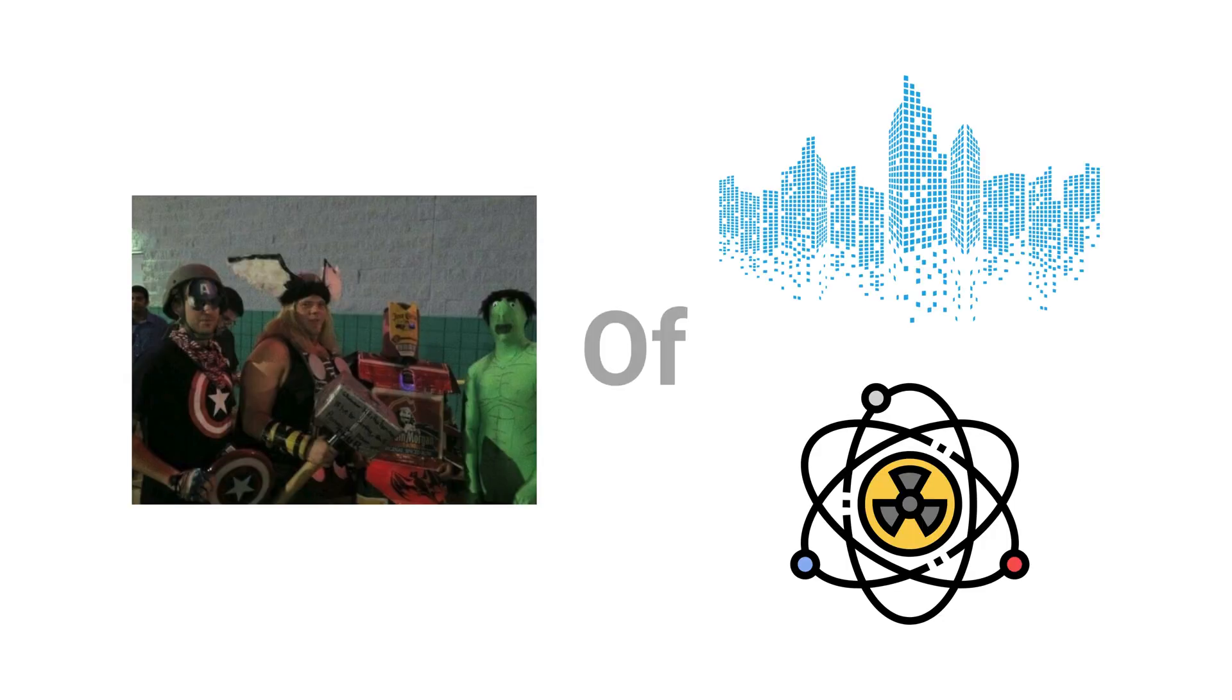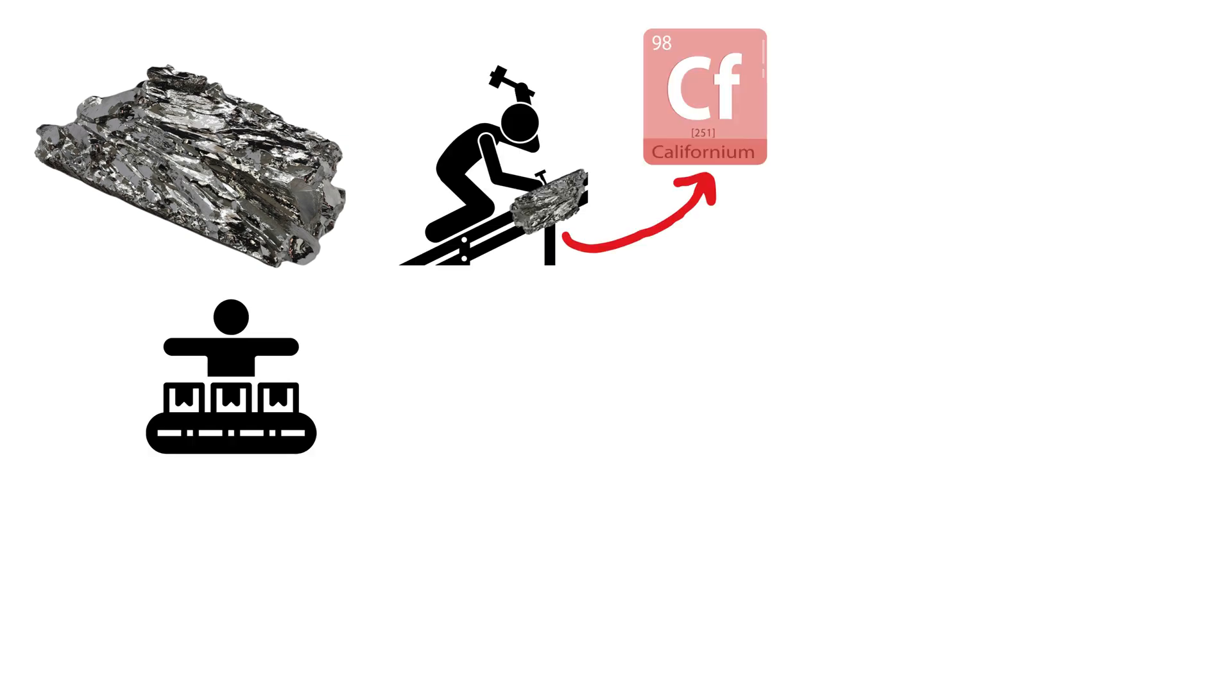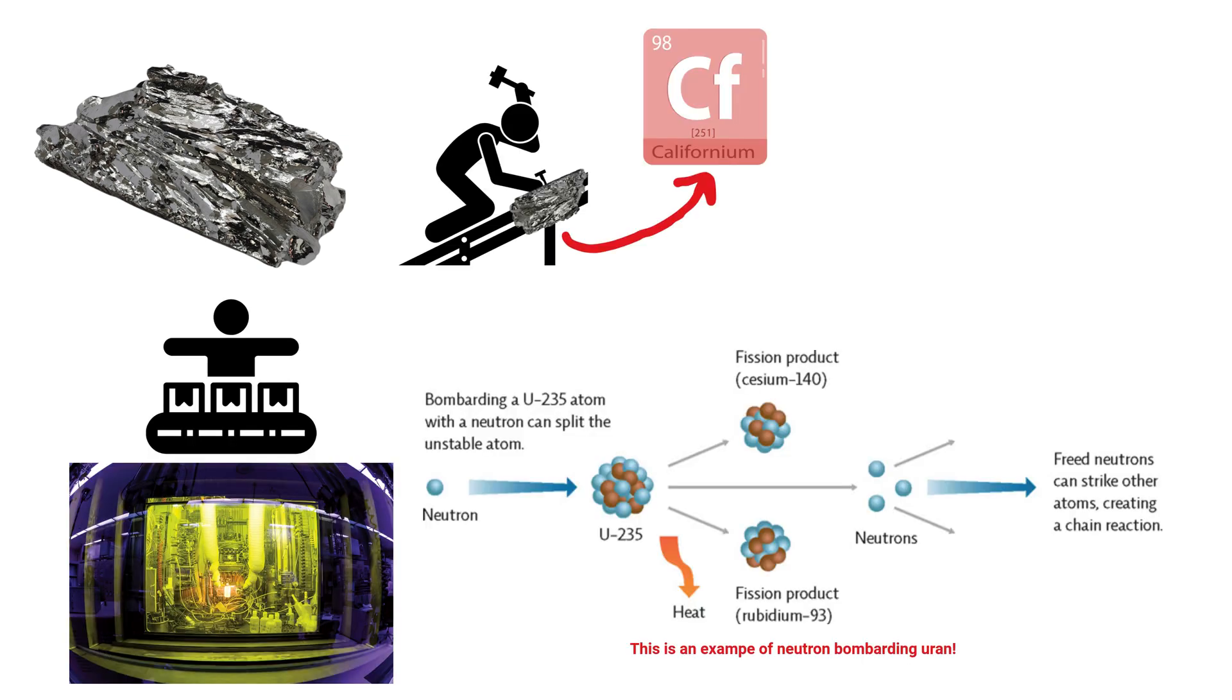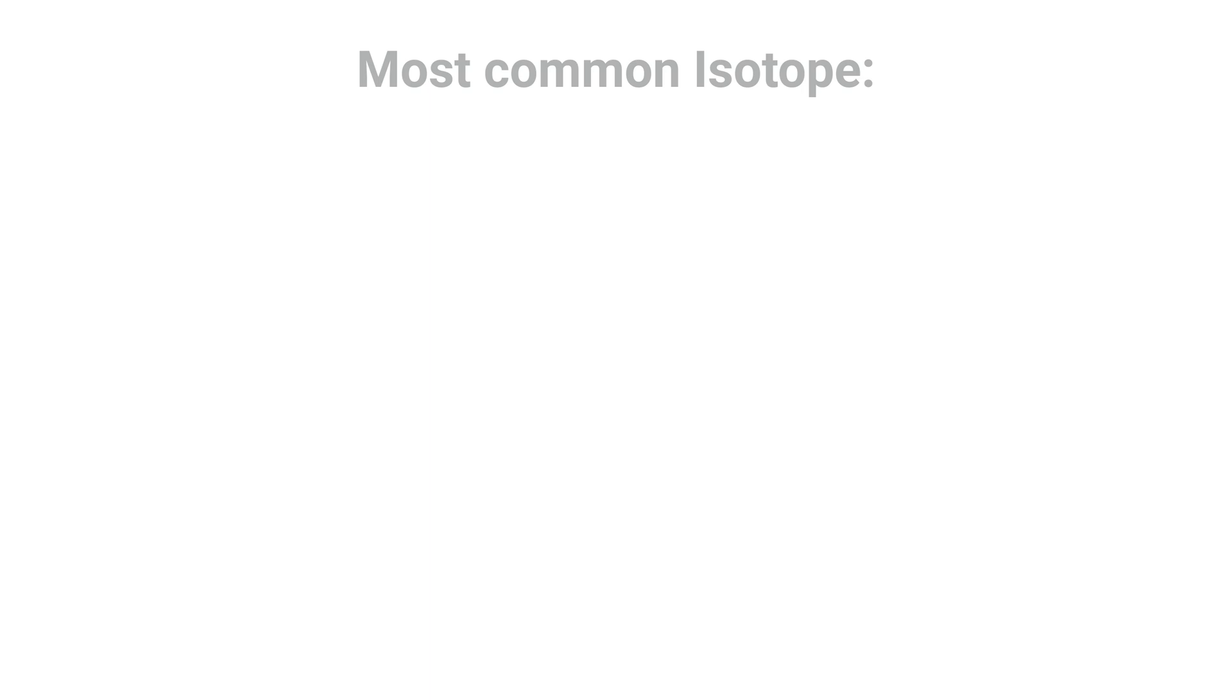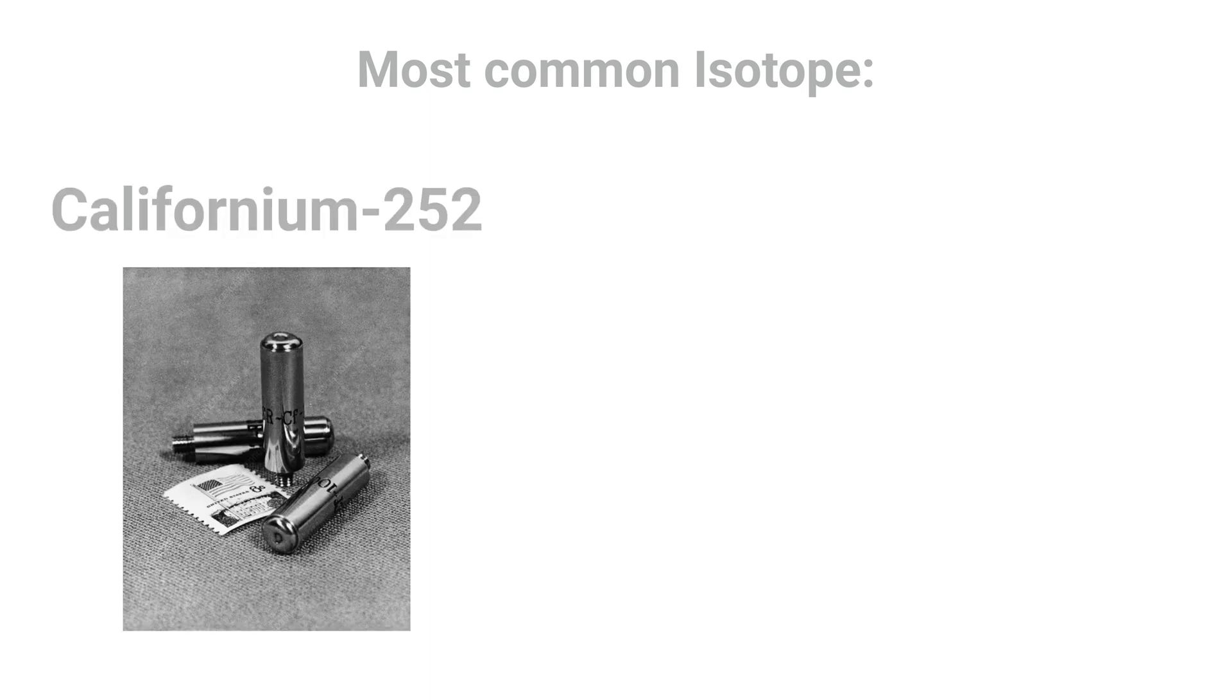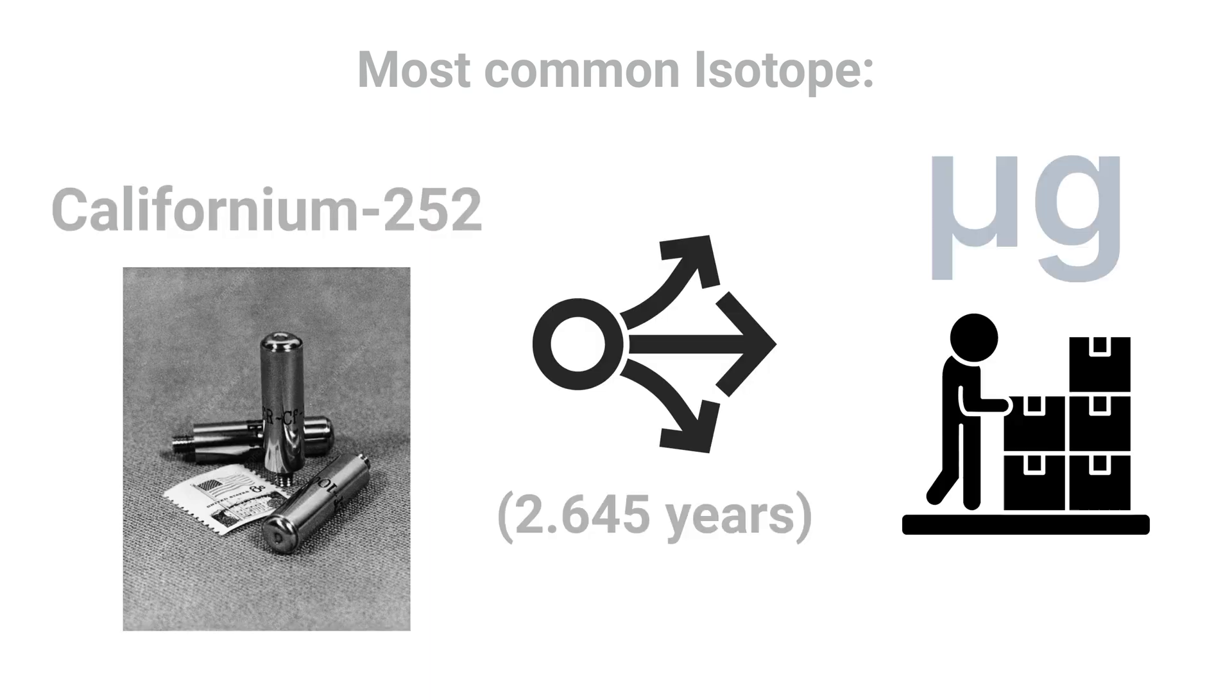Californium. A marvel of modern nuclear science, Californium is a man-made element produced in nuclear reactors through neutron bombardment of curium targets. With its most common isotope, Californium-252, decaying rapidly, only microgram quantities are produced at a time.